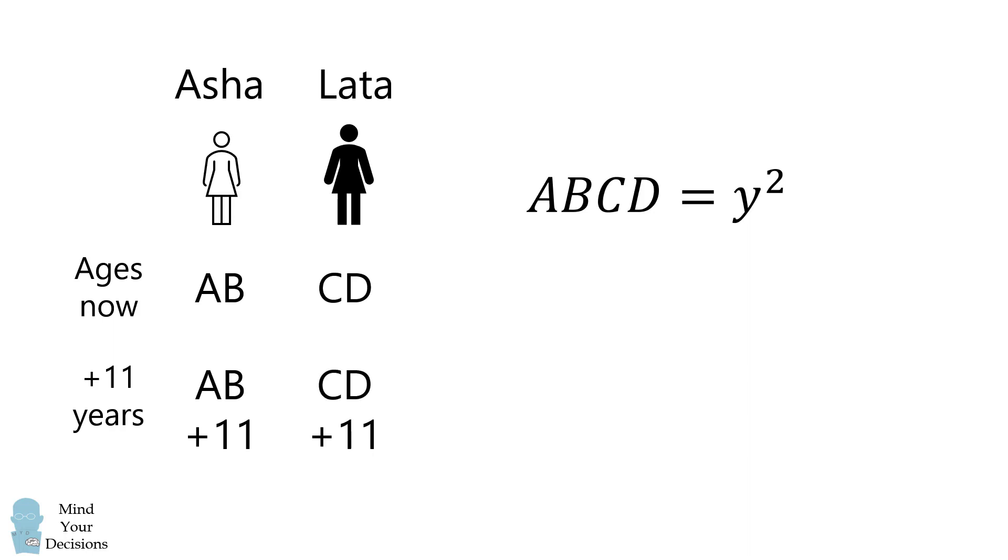In other words, we need to add 11 to each of the digits a, b, c, and d. So we can add 11, 11 to ABCD, the four-digit number, and then we will get another perfect square. So we have ABCD plus 1111 is equal to another perfect square, which we'll write as x squared for another integer x.